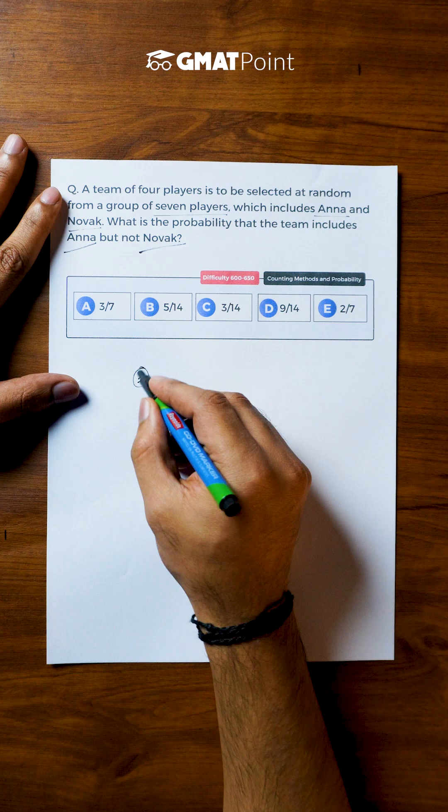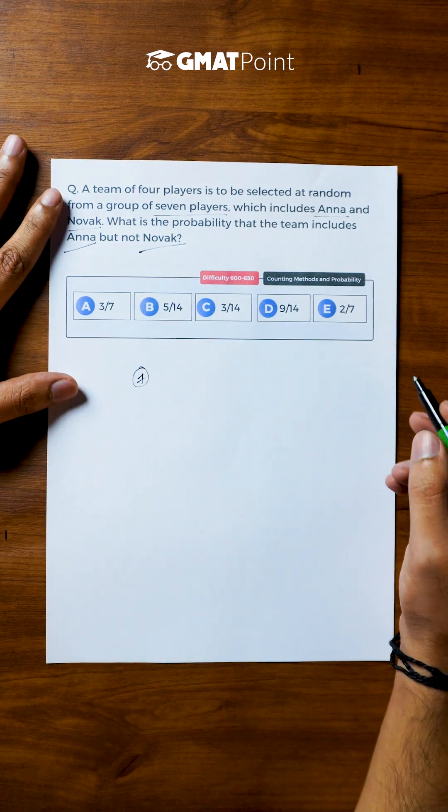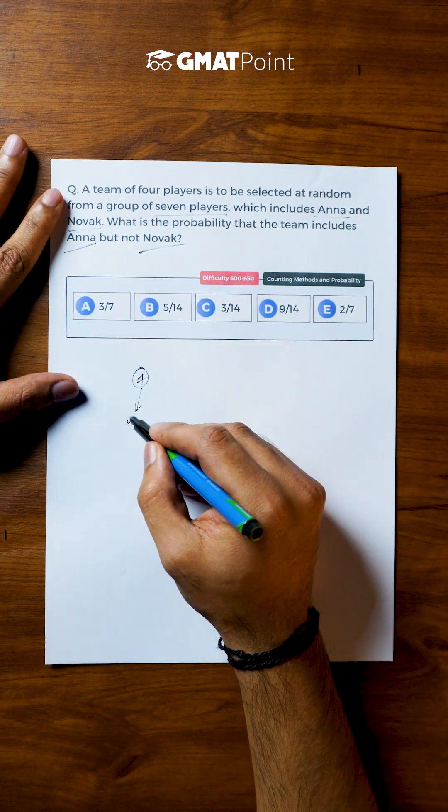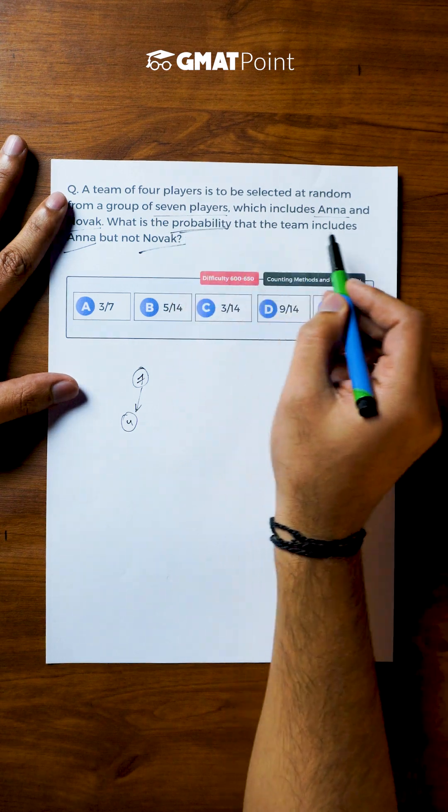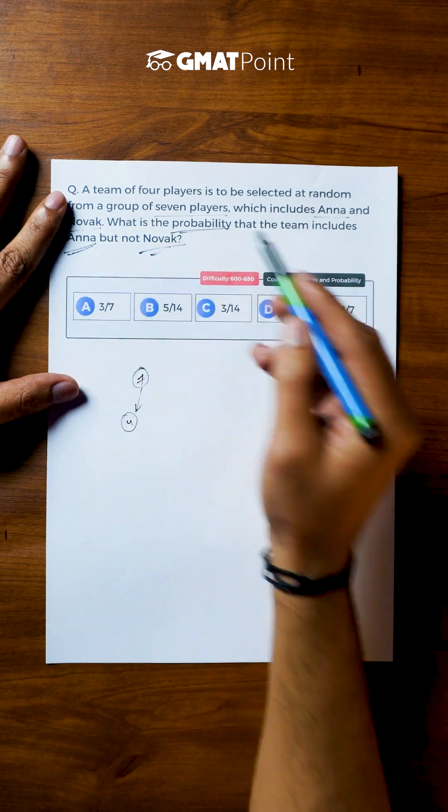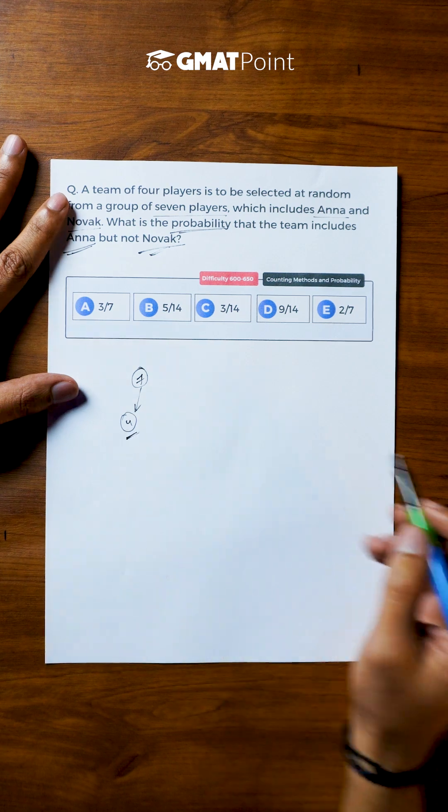So basically there are a group of 7 players, out of them 4 players must be selected. We are asked to calculate the probability that Anna is in the team and Novak is not in the team out of these 4 members.